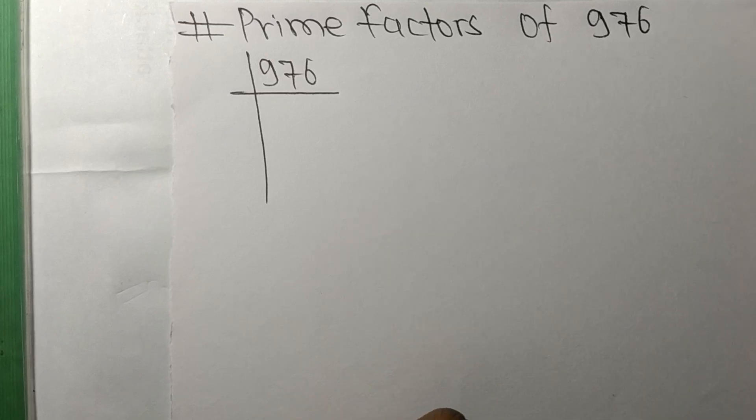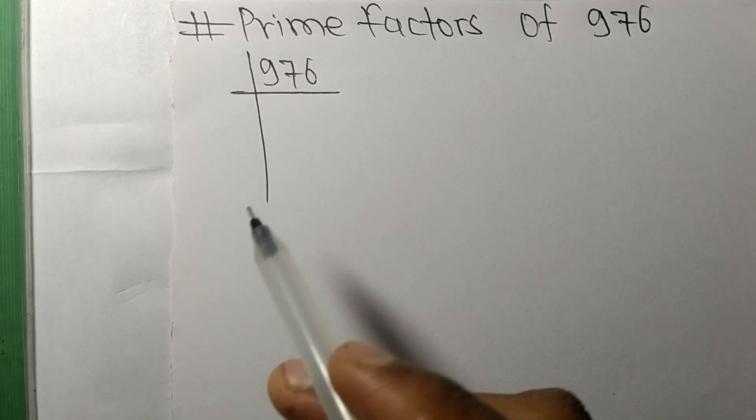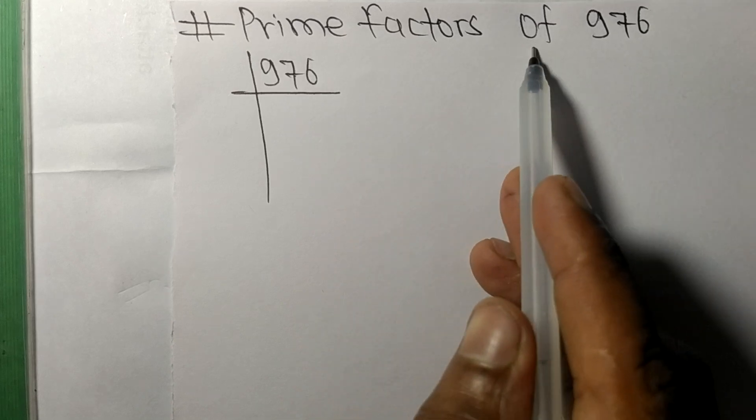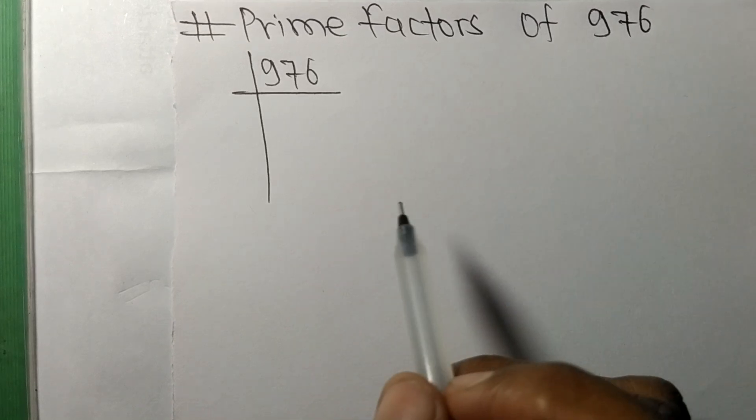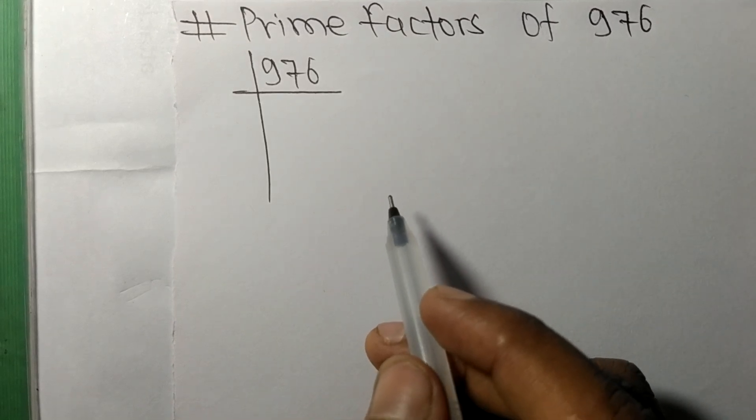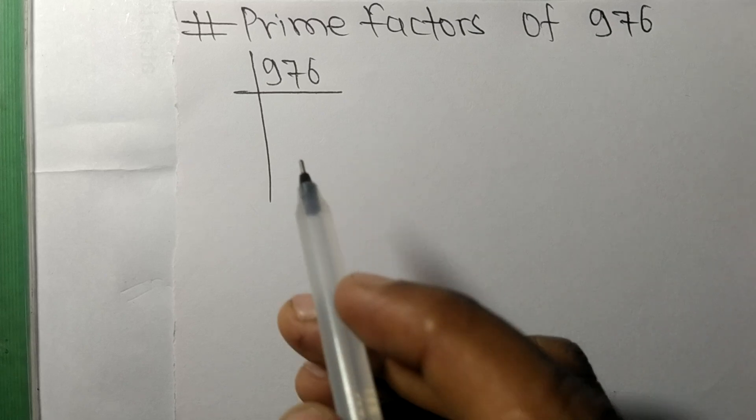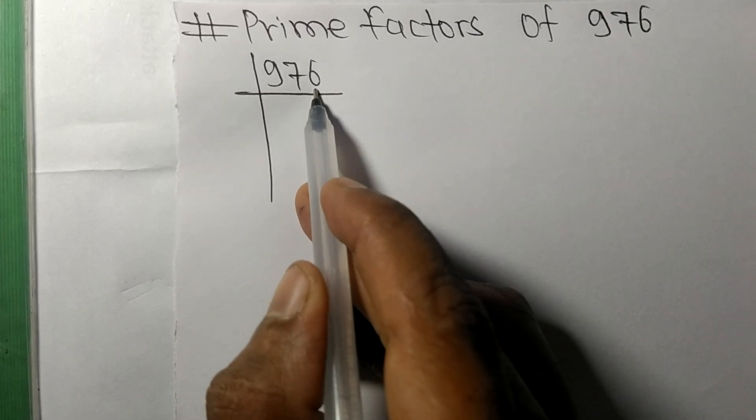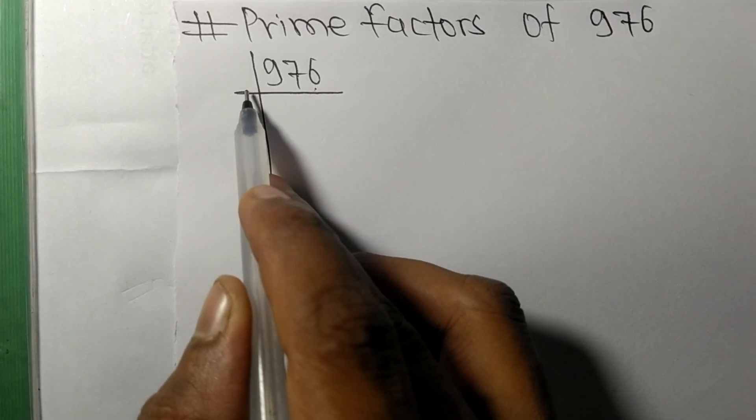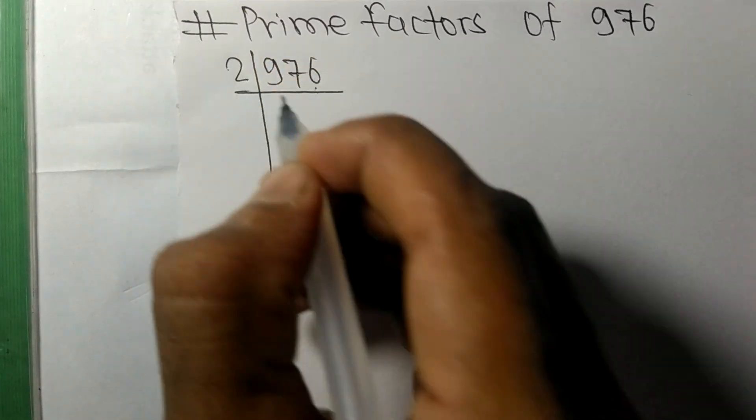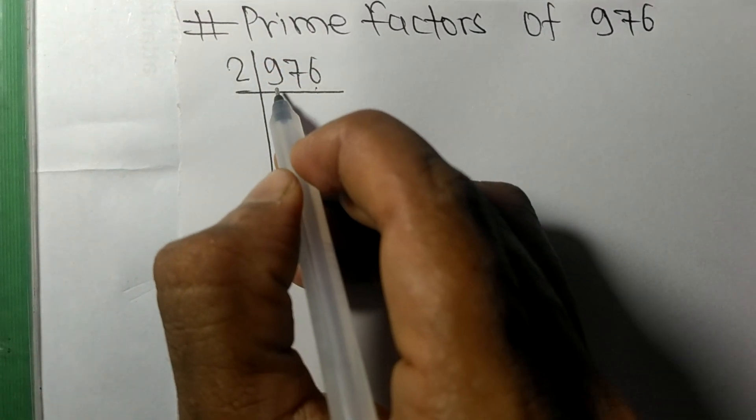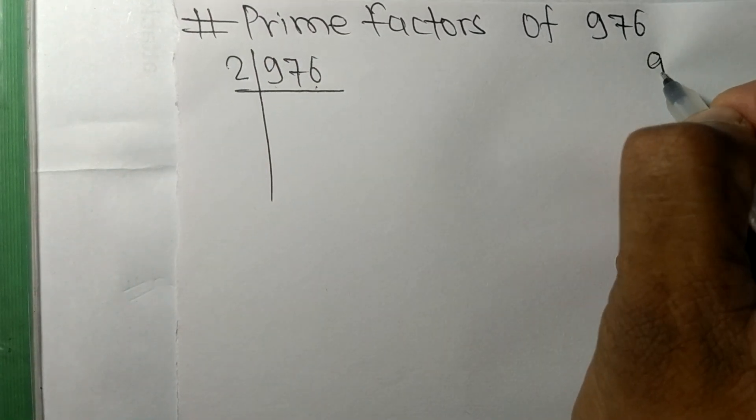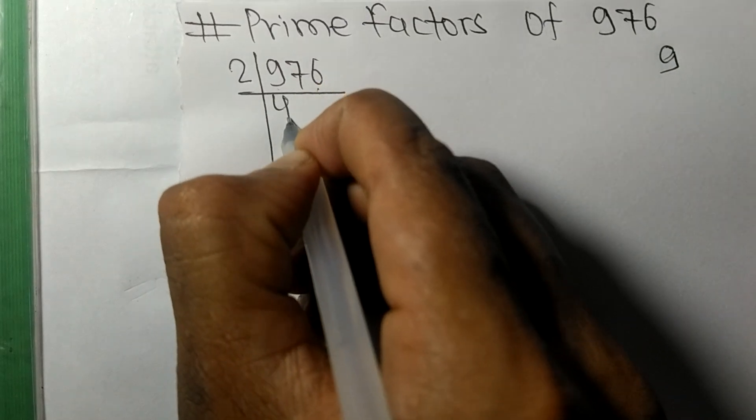So today in this video we shall learn to find the prime factors of 976. 976 contains an even number 6 at last, so it is exactly divisible by 2. First we have 9, so 2 times 4 means 8. On subtracting we get 1.